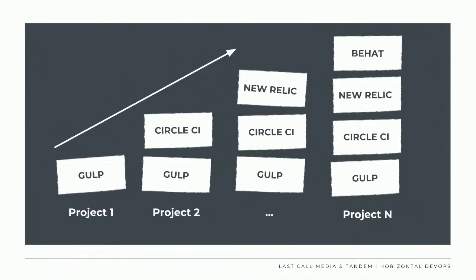In an agency or large corporate setting, you may be rolling out many projects across a time span. You might start your first project with Gulp, work up to CircleCI on your second project, and add New Relic on your third. The idea is that we want to do this in a way that's scalable — allowing us to take these tools and carry them on to the next project, building upward momentum of the overall agency or organization knowledge base.